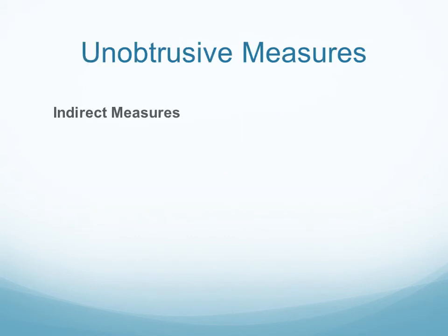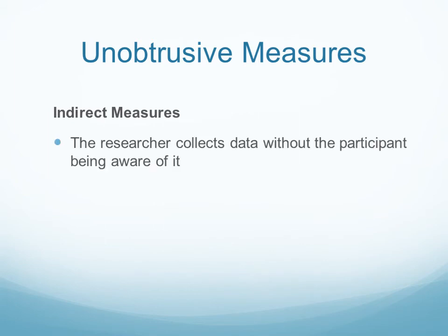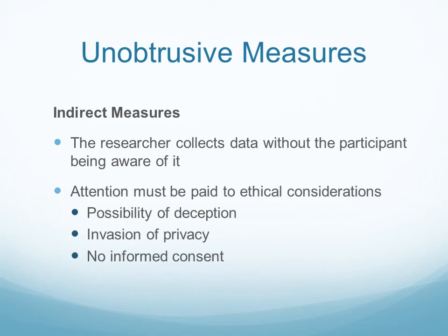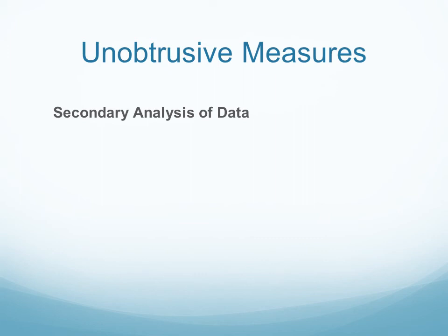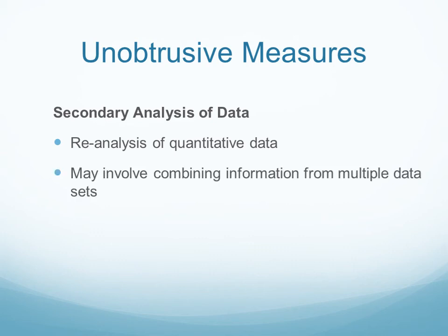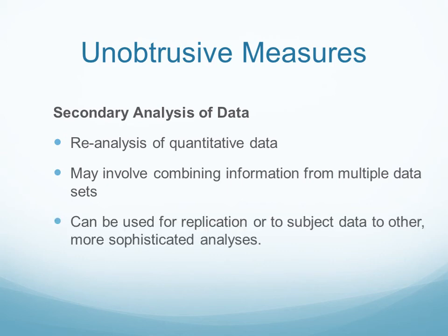Outside of case studies, we also have other unobtrusive measures, including indirect measures where you collect data without the participant being aware. This could be as simple as a video camera in Wegmans observing shopping behavior, or as complex as analyzing people's social media posting habits. We must be careful about informed consent, invasion of privacy, and the possibility of deception. This can also involve secondary analysis of data — retweeting data, Facebook posting data — or reanalyzing quantitative data someone else collected by combining multiple datasets for replication or more sophisticated analysis.